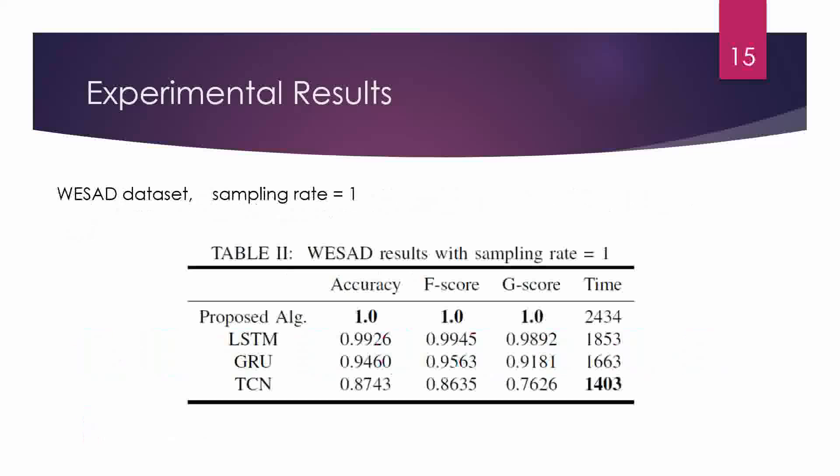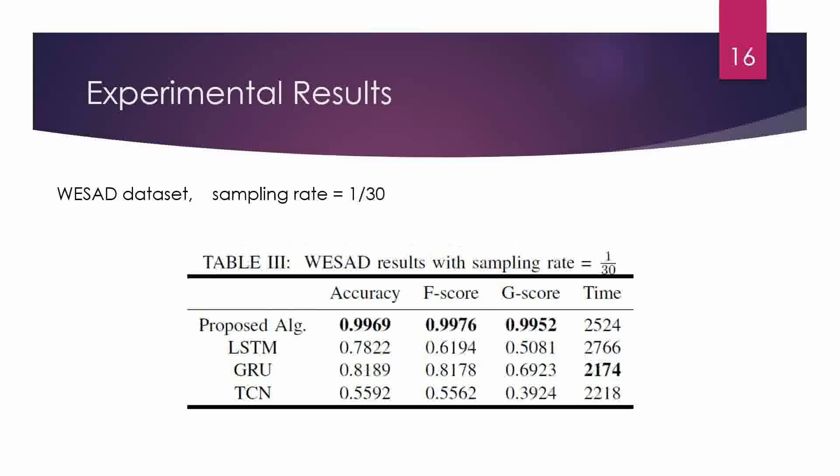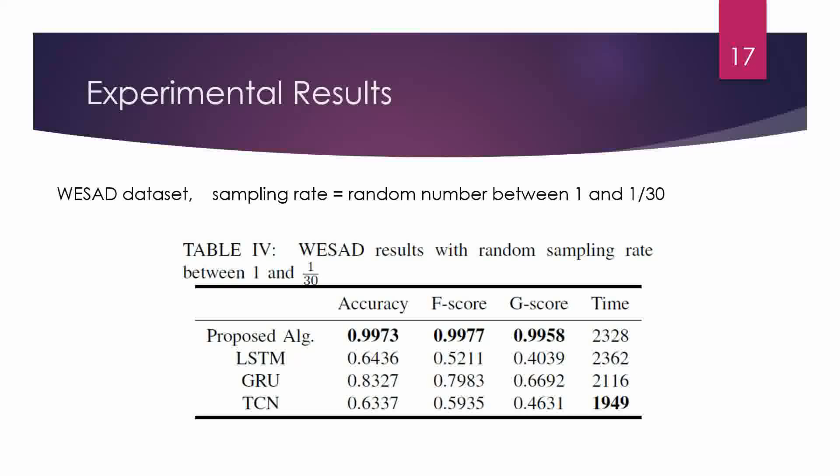For the first dataset, called the VESA dataset, with sampling rate equal to 1, the proposed algorithm has better accuracy, F-score, and G-score than competing methods in all situations except running time. When we change the sampling rate to 1-out-of-30, again the proposed algorithm has better results, and notably the difference in accuracy between the proposed algorithm and the other classifiers is much bigger when the sampling rate is lower. With a random sampling rate between 1 and 1-out-of-30, the proposed algorithm again achieves better results.